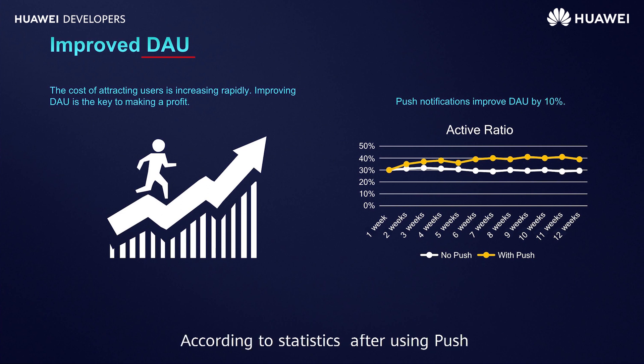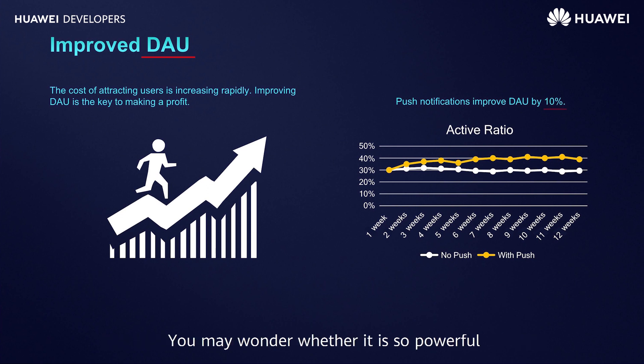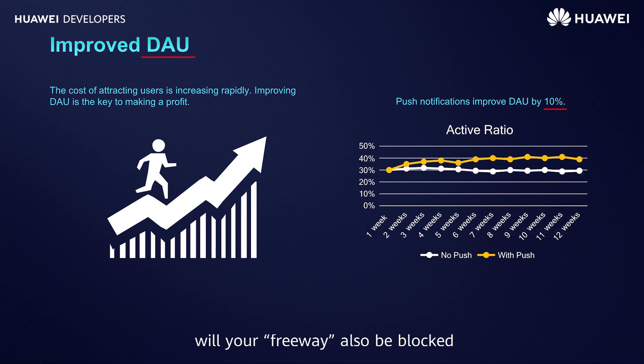According to statistics, after using Push, the overall improvement rate of DAU has increased by 10%. You may wonder whether it is so powerful, because a freeway would be blocked on holidays. Will your freeway also be blocked? Then we will come to the second point.